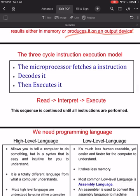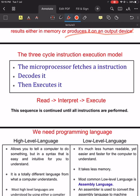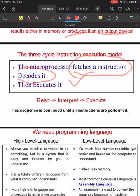Each instruction follows a three-cycle execution model. First, the microprocessor fetches an instruction from memory — it reads the instruction from memory. Then it decodes or interprets that instruction, and finally the execution takes place. So it is a three-cycle instruction execution model: fetching, decoding, and executing — or in other words, read, interpret, and execute.